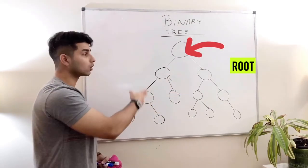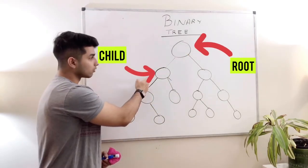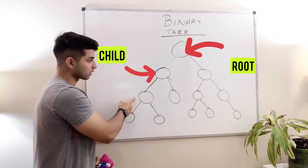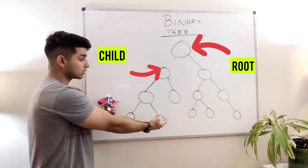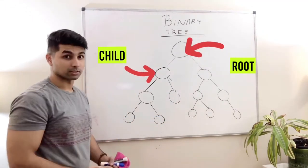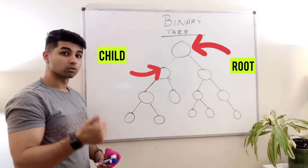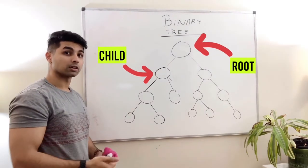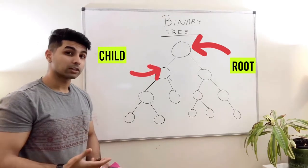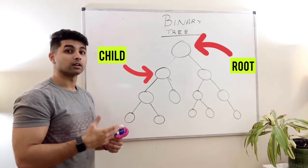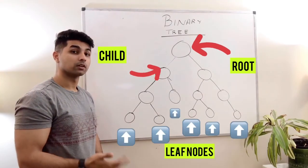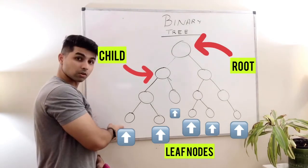These two nodes are children of the root node, which becomes a parent. This node has two more children — these two nodes become the children and the parent for those two nodes is this node itself. So now you know what a root node is, where children nodes are, and what a parent and child node is.